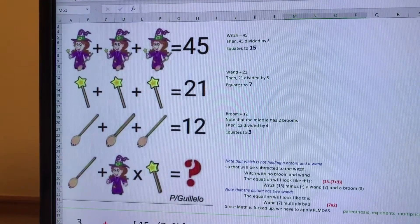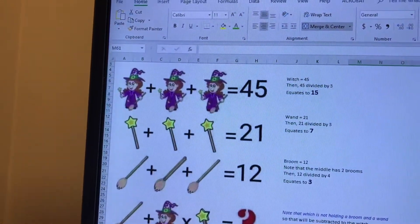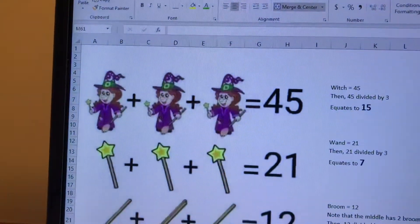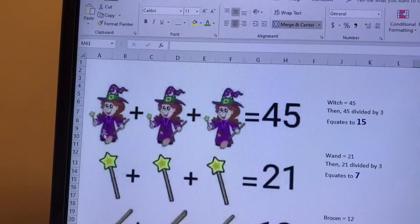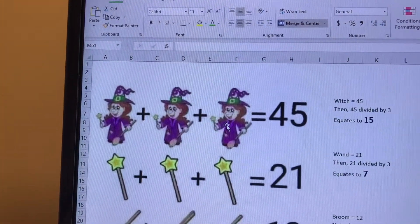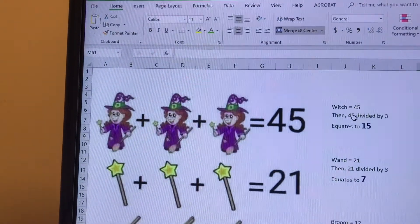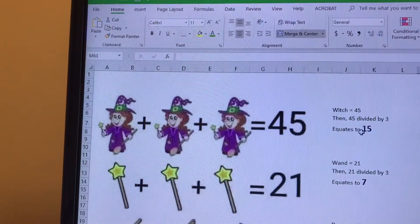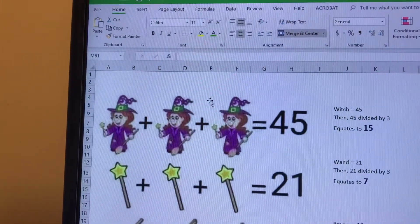For the first one, if you can see right here, let me zoom in. The first section is the witches - you can see the witch is holding a wand and a broomstick. Each one, there's three of them, so 45 divided by 3. So each witch consists of 15. That's what I think for that computation.